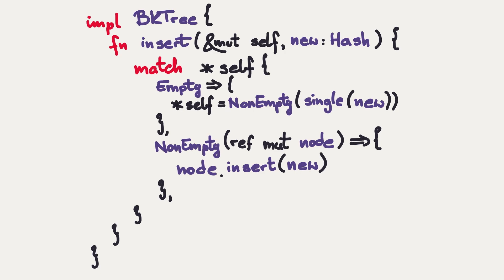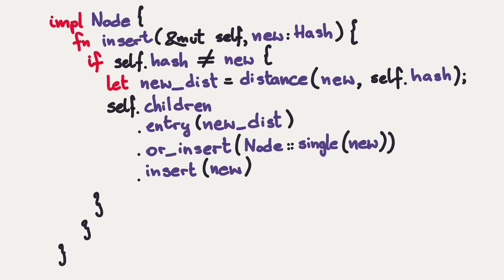And the insert on the node looks as follows. If the new hash, the hash to be inserted, is equal to the current hash, I'm done. It's there. Otherwise, I have to calculate the distance between the hash to be inserted and the current hash. And then I look at the collection of my children. And I take the child at offset new distance. If it's absent, I insert a singleton node. And then I recur. Call insert on the node I found. Because this is the place which, according to the principle according to which we build the tree, this is where the hash must belong. And this is enough to build the tree preserving our constraint.